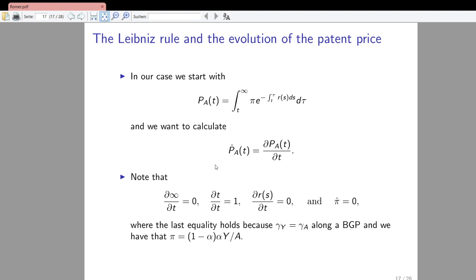The upper bound of the integral is infinity. Taking the derivative with respect to time gives zero because time doesn't appear there. The derivative of the lower bound t with respect to t is obviously one. The derivative of r(s) with respect to t is also zero, because time does not show up there as such — only in the boundaries of the integral in the exponent.